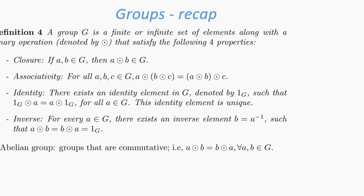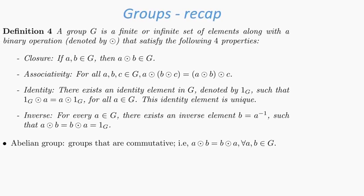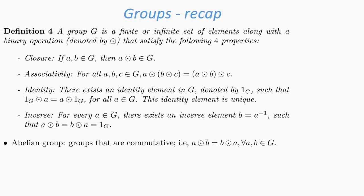Just to recap what groups were: a group is a finite or infinite set of elements along with a binary operation that satisfies the following four properties: closure, associativity, identity, and inverse. Abelian groups were groups that were also commutative.